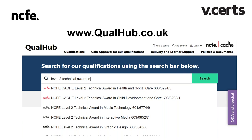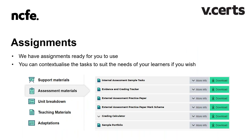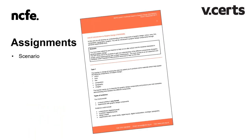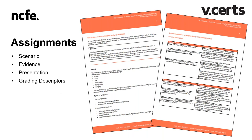Begin typing your qualification subject area, qualification code, or even just 'Level 2 technical award' and it will give you a list of suggested qualifications. We do have assignments ready for you to use on the Graphic Design QualHub page. There is an assignment for each internally assessed unit and you may wish to change aspects of the scenario so that it can be more suitably contextualised for your learners. The first thing on the brief will be the scenario, designed to give a real-life situation to help set the assignment in context.